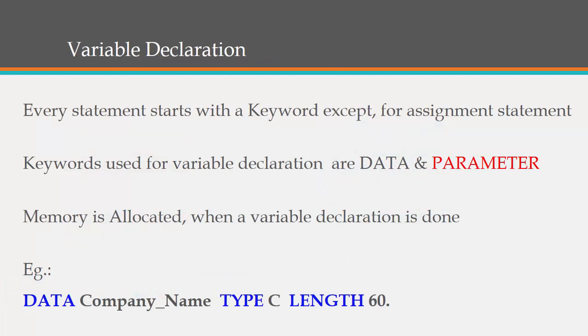For variable declaration, every statement starts with a keyword except for assignment statements. Whenever we write ABAP code, the first word of every statement would be a keyword, except when doing an assignment like 'a = 45' — in that case no keyword is given at the start. The keywords used for variable declaration are DATA and PARAMETERS. If you want to declare a variable you write DATA — for example: DATA company_name TYPE C LENGTH 60.